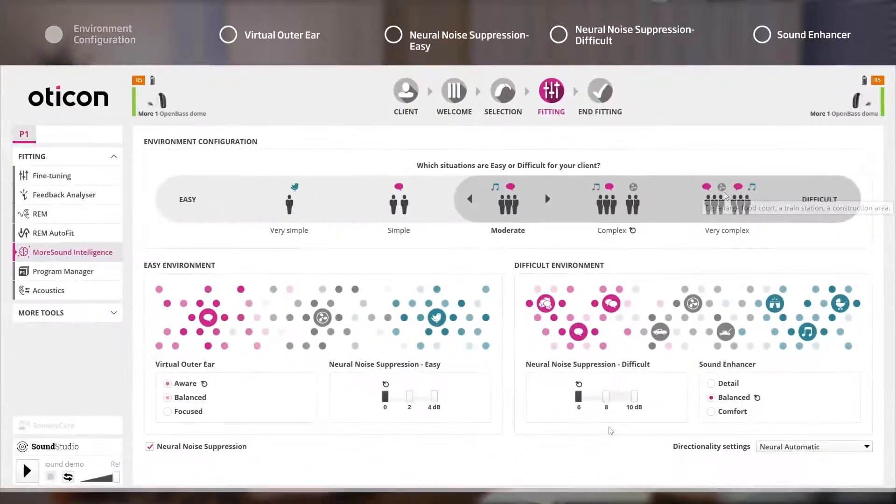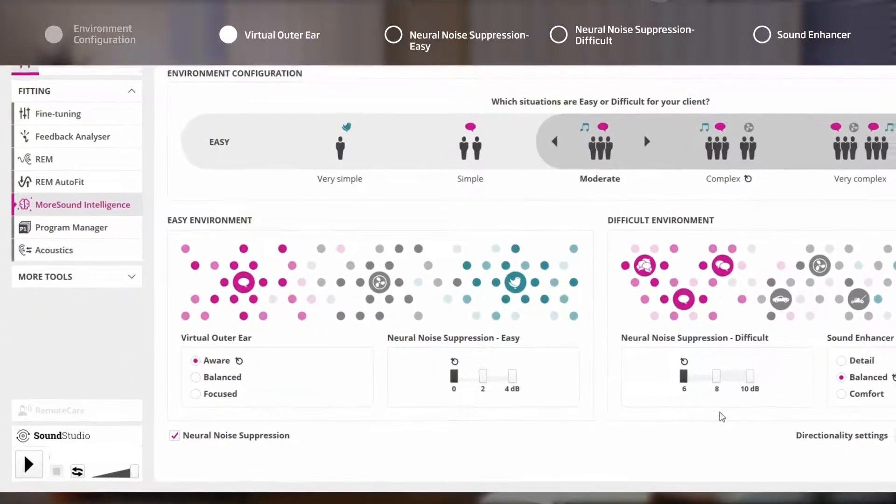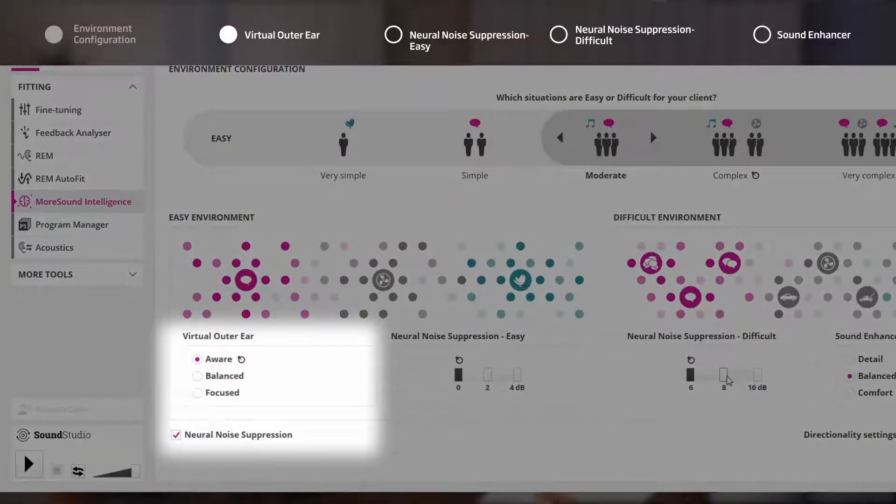As Rachel is not experiencing much difficulty in simple situations, Virtual Outer Ear will be left as Aware. If Rachel was struggling to hear even in easy listening environments, Focus setting could be considered which would allow more focus on speech from the front while keeping access to all surrounding sound scene.